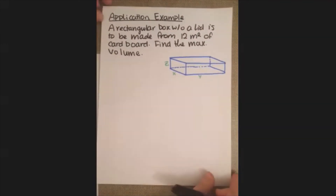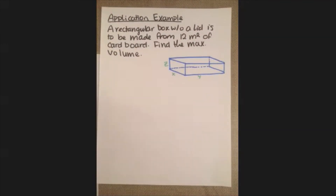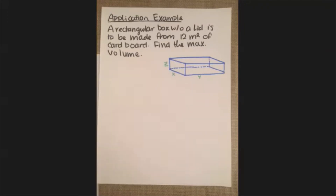This is a generalization of a classic Calc 1 problem — we have a rectangular box with no lid made from a limited amount of material. We're told we have 12 square meters of cardboard to make the box, and we want to maximize the volume.